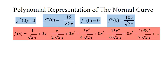Continuing to take derivatives: the 5th derivative evaluated at 0 is 0; the 6th evaluated at 0 is negative 15 over the square root of 2 pi; the 7th derivative gives 0; and the 8th derivative evaluated at 0 is 105 over the square root of 2 pi.